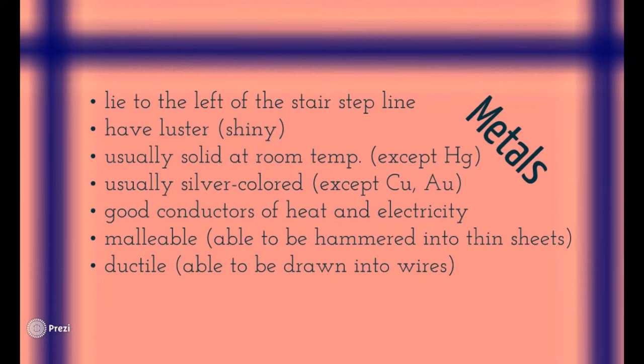Malleable and ductile — you need to know these two definitions; they are pretty good test questions. Malleable: if you think of a mallet, which is a hammer, it means you can hammer metals into sheets — aluminum, gold, lead, copper can all be pounded into sheets. Ductile means they can be formed into wires. If you're in engineering, you already know these definitions, as they're very common in carpentry and related fields.